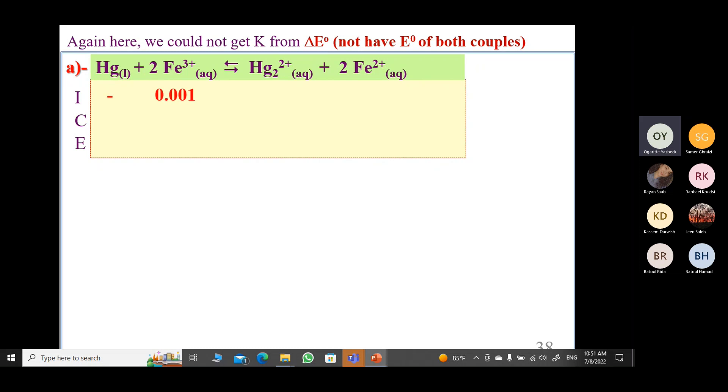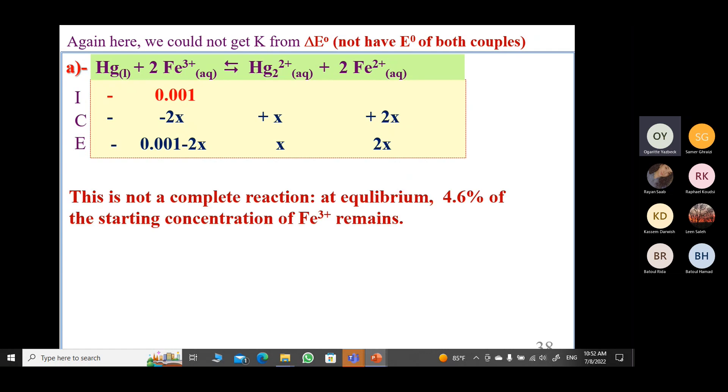And we need to do pretty much what we did in the other one. Ice table. Mercury is a liquid, so I'm not going to put its concentration. Initial concentration of Fe³⁺ is given to me: 0.001 minus 2x, plus x, plus 2x. Is it a complete reaction? I don't know. I don't have K. Do I have delta E°s to even see if the difference is greater than 0.25 to assume that maybe it's complete? No, I don't have delta E°s. But what do I have?